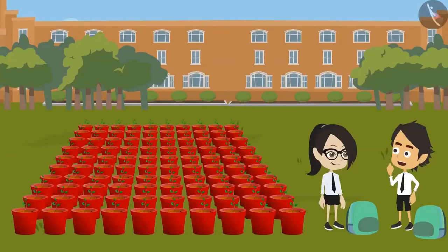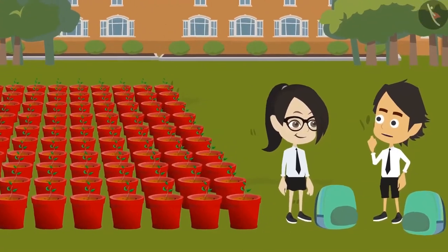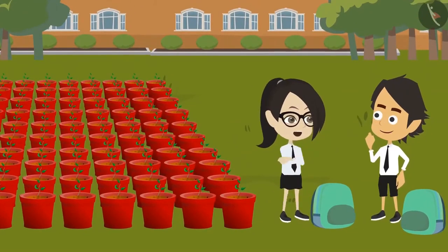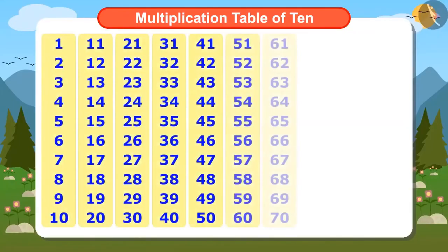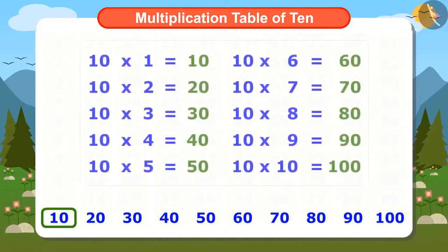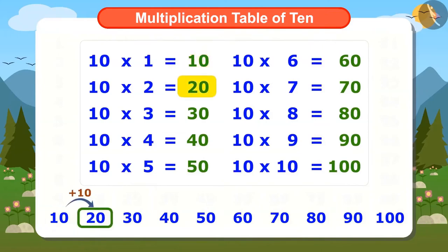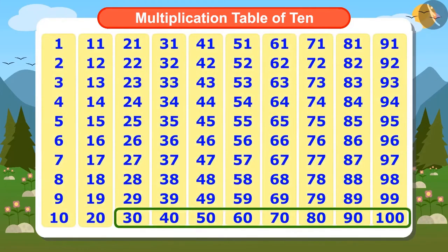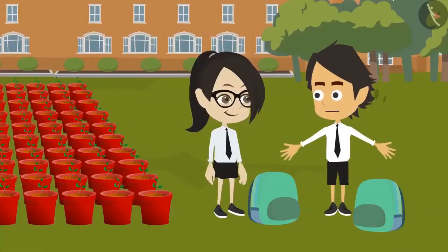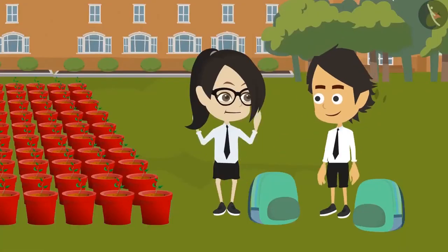Yes, I know this method as well. It is easier to find the multiplication table of 10 because when we write the numbers from 1 to 100, the first number of the multiplication table of 10 is 10. When we add 10 to this number, we get 20, which is the second number. Again when we add 10 to 20, we get 30, which is the third number. Similarly, all these numbers are the numbers of the table of 10. Oh yes, this is exactly what I wrote.